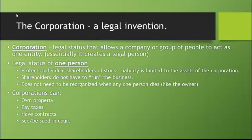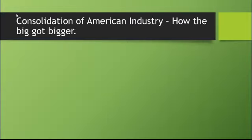Corporations can own property, pay taxes, write contracts, sue people, and be sued in court — they can pretty much do anything a regular person can do. The benefits of the corporation are that it allows for an easier type of business organization and limits the risk of investors, which encourages even more investment. Let's talk about how the big get bigger, and how American industry got consolidated very quickly.